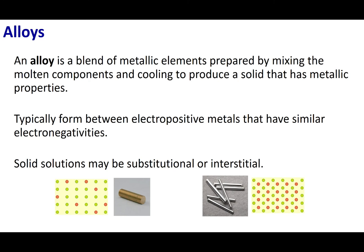An alloy is a mixture of two different metallic compounds. This mixture is going to be a homogeneous mixture. In general, the best type of alloys are formed when the electronegativity of our metals are about the same. There are two major classes of alloys: substitutional and interstitial alloys.